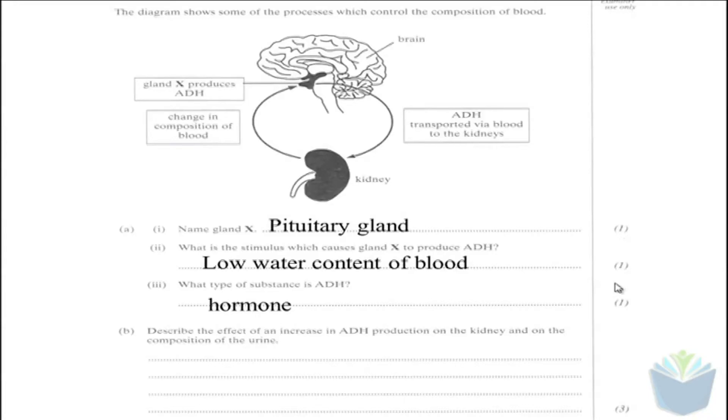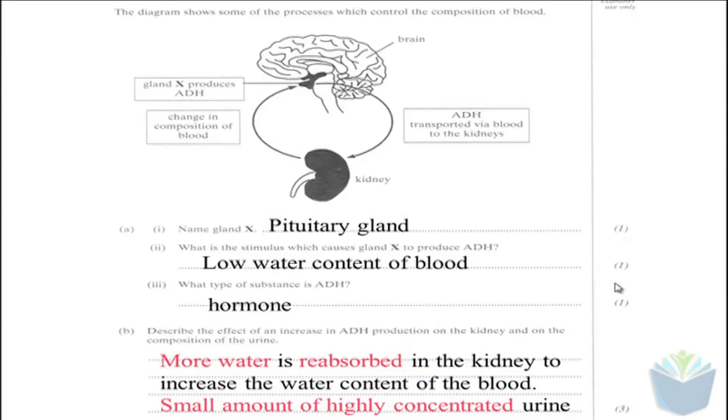For B, describe the effect of an increase in ADH production on the kidneys and on the composition of urine. It's looking for three main things. If there's an increase in ADH production, there's obviously going to be more water being reabsorbed by the kidneys, which is going to increase the water content of the blood. Therefore, your urine is going to be highly concentrated. So more water reabsorption in the kidneys and highly concentrated urine.